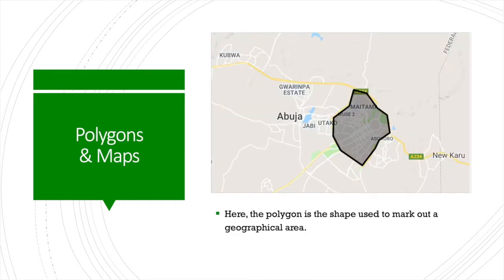Now, how does this relate to maps? Well, if you have a look here, you can see that this is a region in Abuja which has been selected. So you can see, okay, that's a particular region I'm referring to. That's a polygon, and that's what we use to map out different areas that we're trying to get information about or portray information about. The different local government areas are going to be demarcated using polygons.